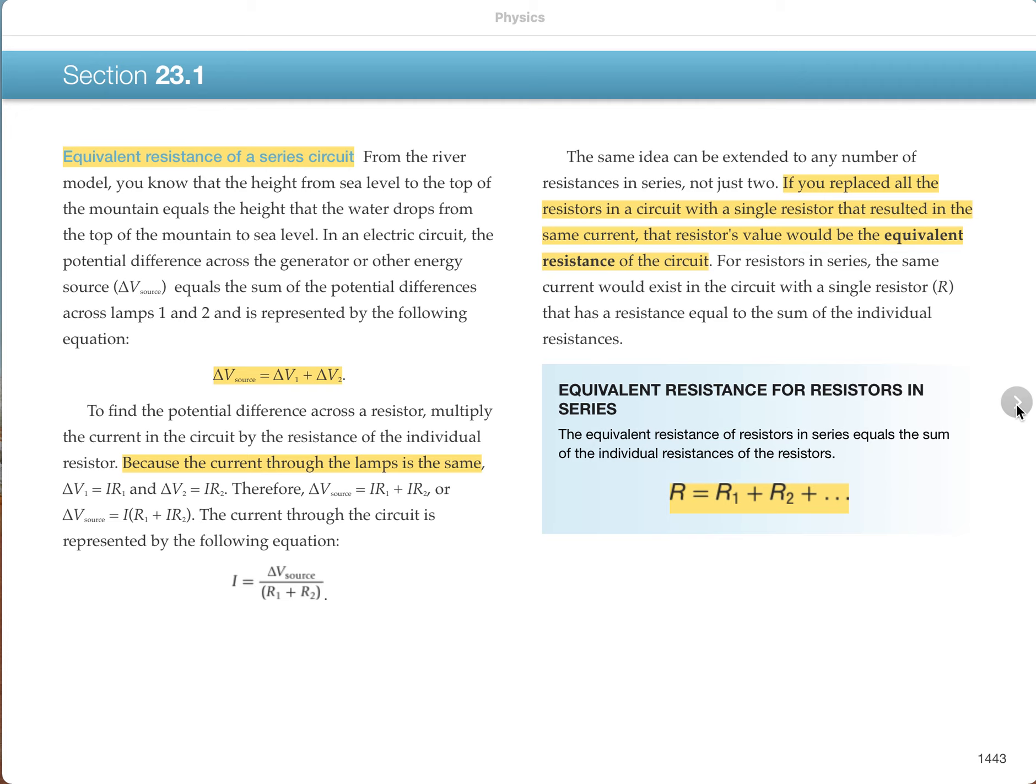A very important concept when we analyze circuits is the idea called equivalent resistance. The equivalent resistance is what one resistor could you replace all the resistors in the circuit with such that the same current would flow out of the battery. In that way, the battery can't tell the difference. So we say it's connected to an equivalent resistance.